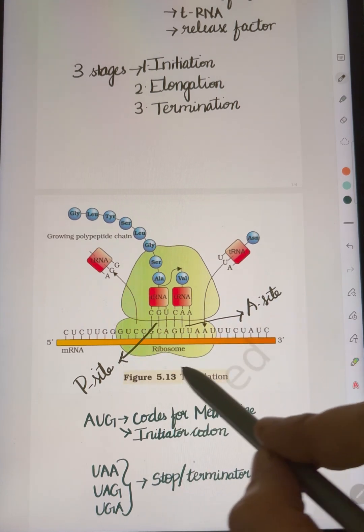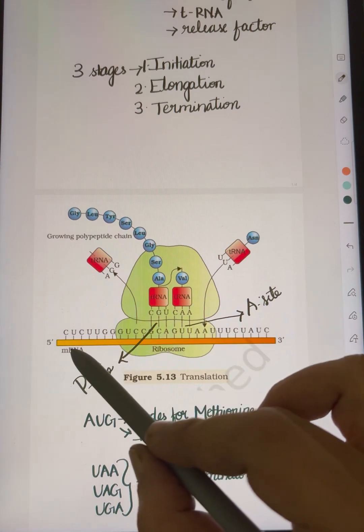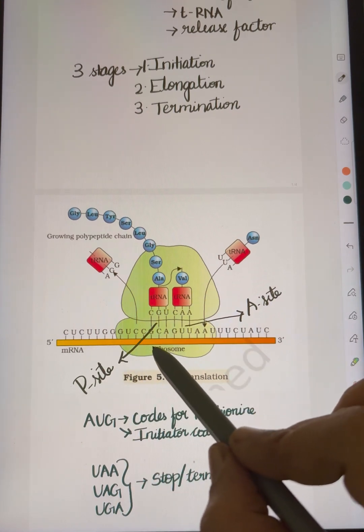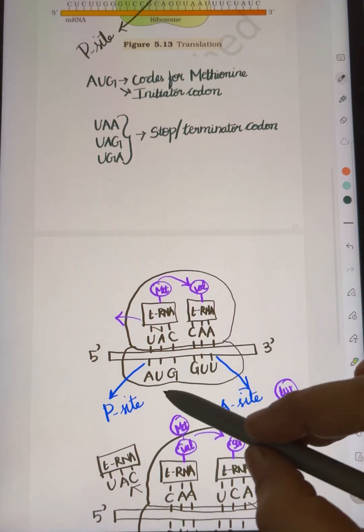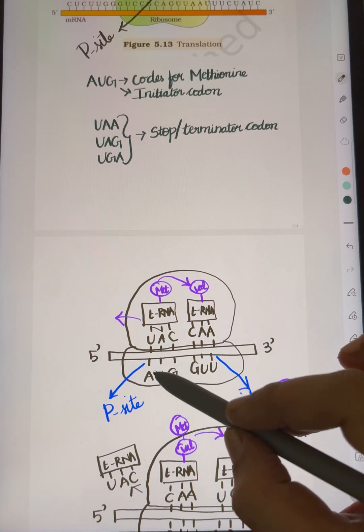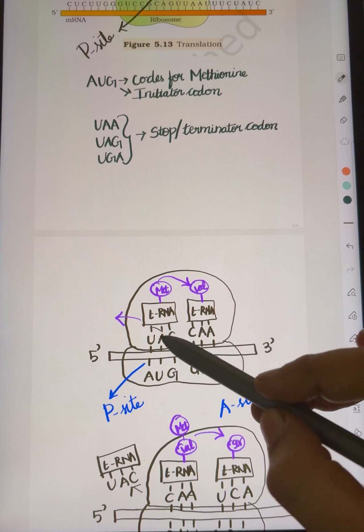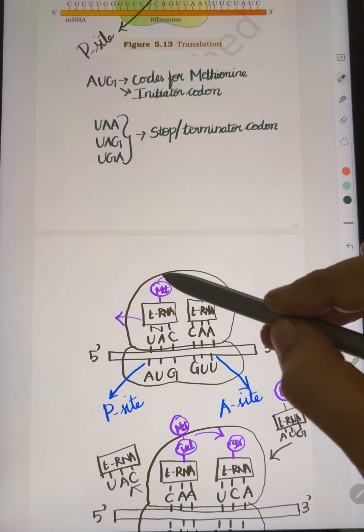In the smaller subunit, first the 5-cap will attach at the initiator codon. The initiator codon is AUG or start codon. The corresponding tRNA with anticodon binds. AUG codes for methionine.